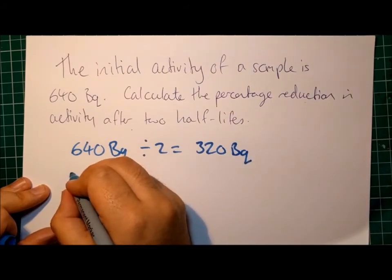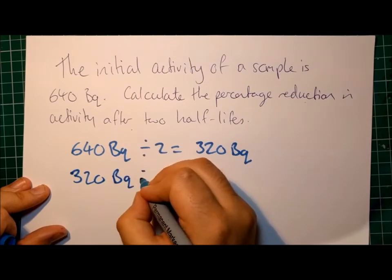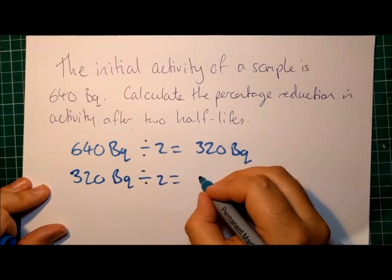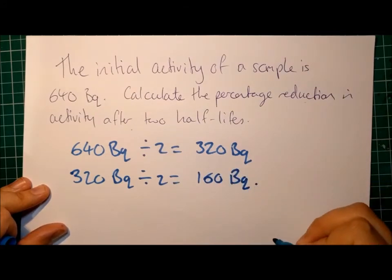Then if it had an activity of 320 becquerels, and again we divide that by 2, that means after our second half-life, we have an activity of 160 becquerels.